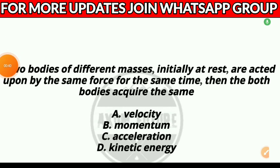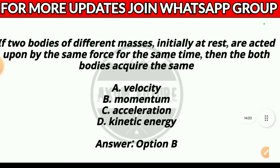Question 14. If two bodies of different masses initially at rest are acted upon by the same force for the same time, then both bodies acquire the same: Option A, velocity; Option B, momentum; Option C, acceleration; or Option D, kinetic energy. Answer: Option B, momentum.